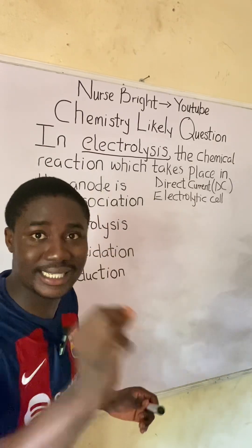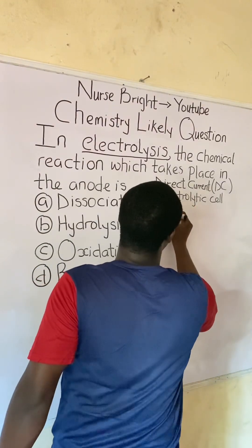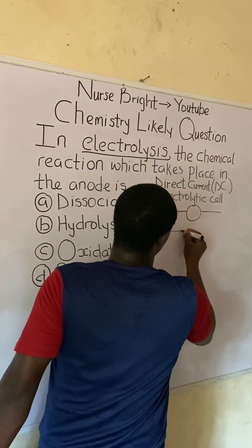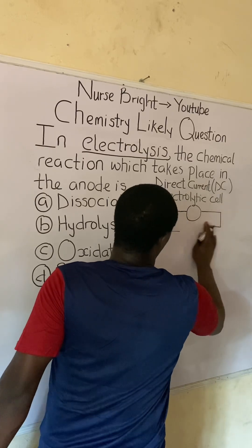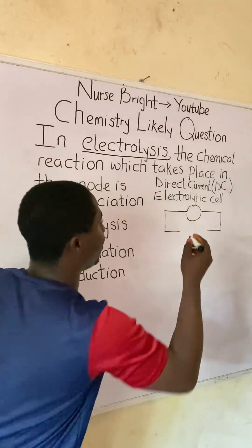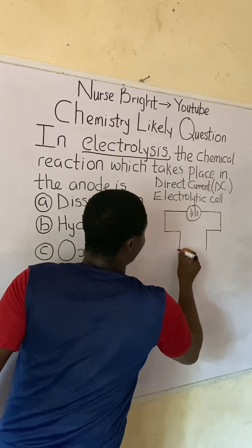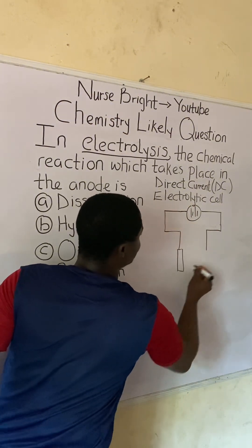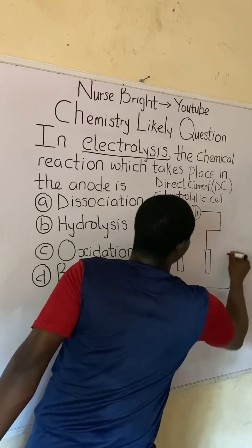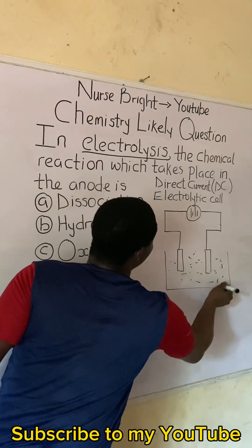I am now drawing the diagram of an electrolytic cell. This is how an electrolytic cell looks like. Here is the direct current source — called the DC direct current source — and we have something called terminals, which I'm going to explain as we progress in this video lesson.